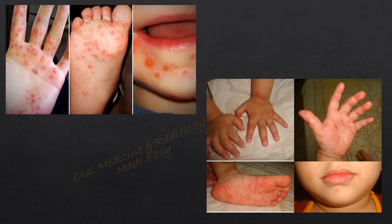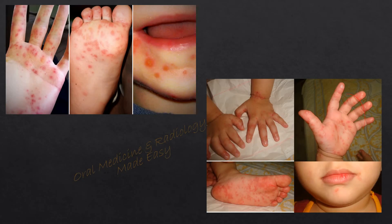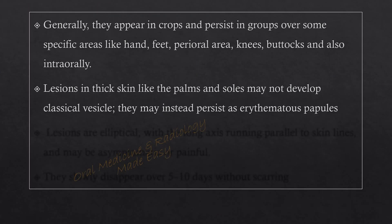As you can see in these pictures, erythematous macules form mainly on the palms and soles. You can also see small blisters formed on the hands and around the lips, and also an ulcer on the lip. Generally, lesions appear in crops and persist in groups over specific areas like the hands, feet, perioral area, knees, buttocks, and also intraorally.